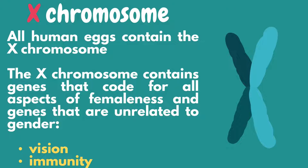All human eggs contain the X chromosome. The X chromosome contains genes that code for all aspects of femaleness and genes that are unrelated to gender, like vision and immunity. The X chromosome in humans spans more than 153 million base pairs, the building material of DNA. It also represents about 800 protein-coding genes, compared to the Y chromosome containing about 70 genes out of 20,000 to 25,000 total genes in the human genome.